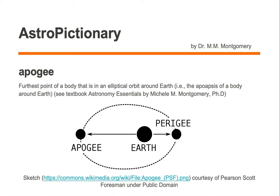Apogee is the furthest point of a body that is in elliptical orbit around the Earth — it is the apoapsis of a body around Earth. Whenever we're talking about bodies making elliptical orbits around the Earth, we talk about apogee as opposed to apoapsis, which is a generic term for any body in elliptical orbit around any object. Since we're talking specifically about the Earth, we're talking about apogee.